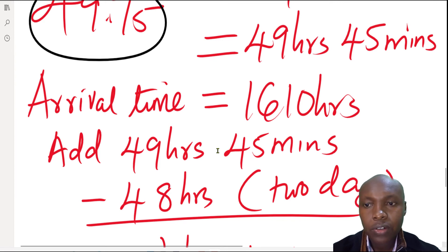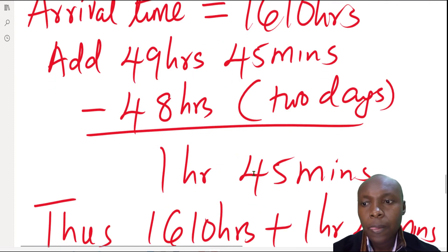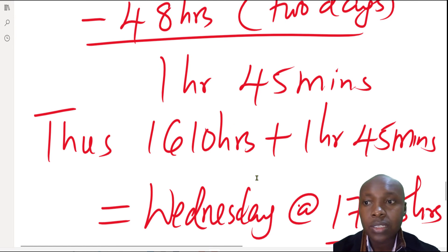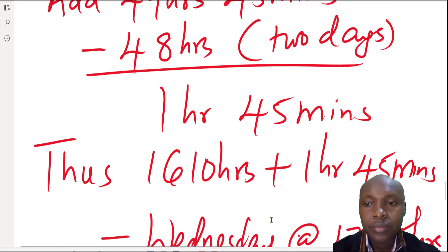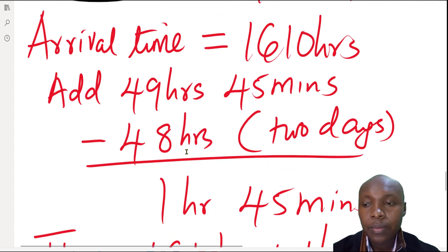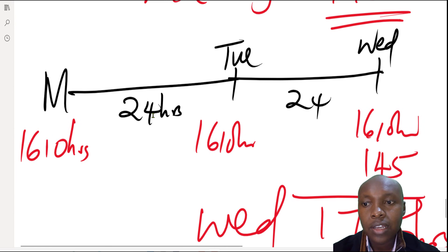To find the arrival time, the local time at B is 16:10 hours. We add 49 hours and 45 minutes. Since 48 hours represents two days, starting from Monday, two days brings us to Wednesday 16:10. We then add the remaining 1 hour 45 minutes to get Wednesday at 17:55 hours.